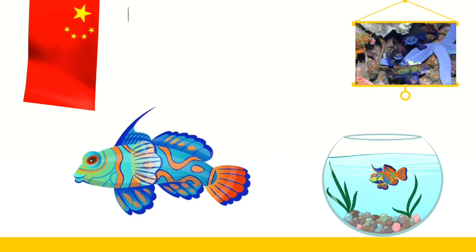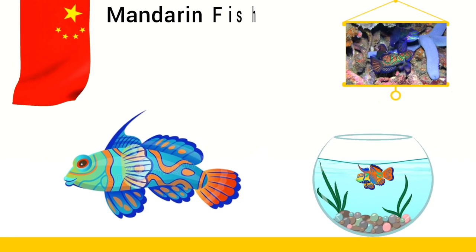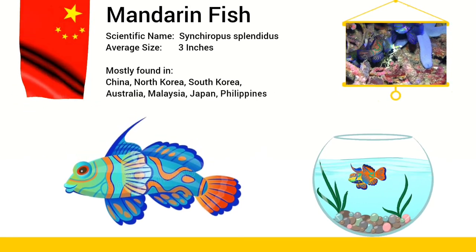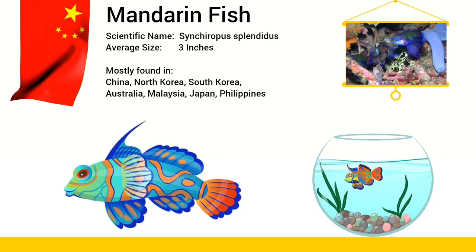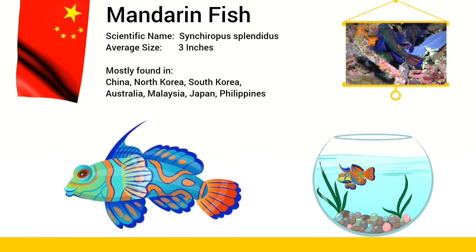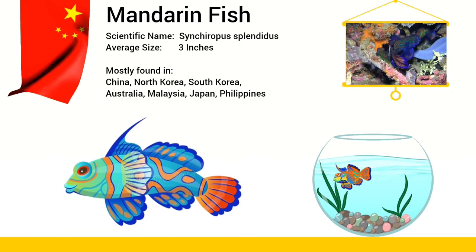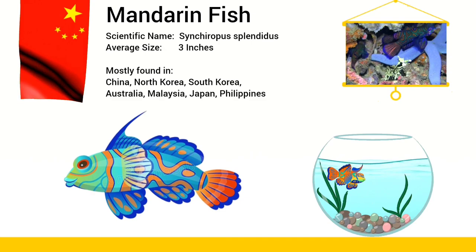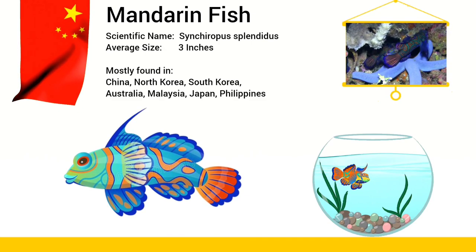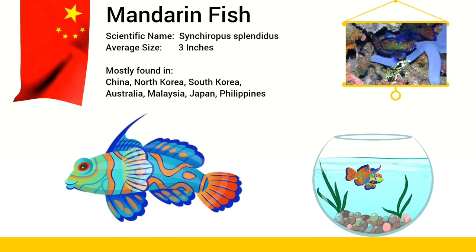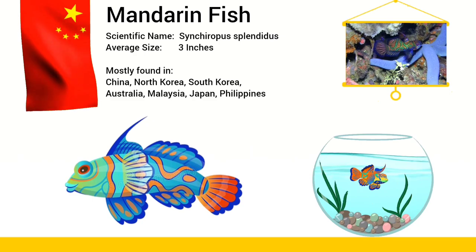There are at least 182 species of Mandarin Fish. You can find Mandarin Fish in the Western Pacific Ocean from Malaysia to Australia.